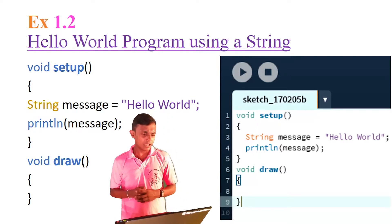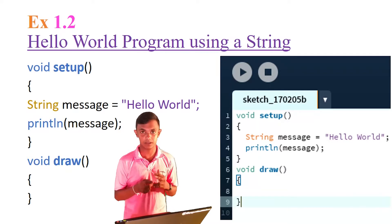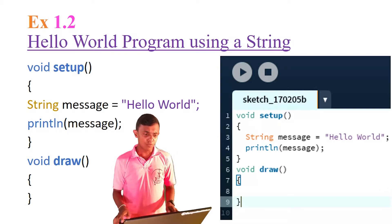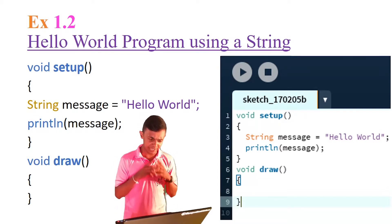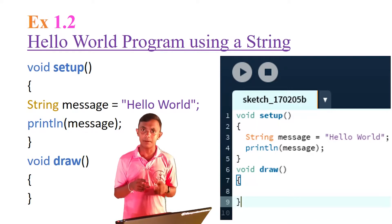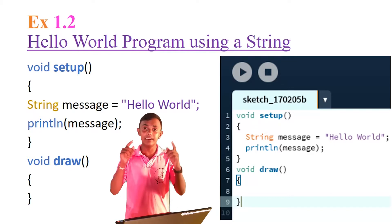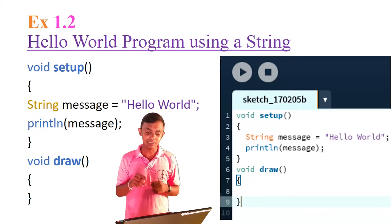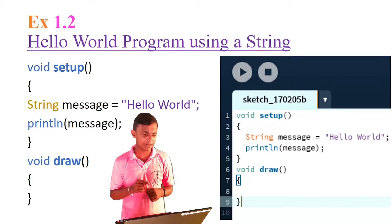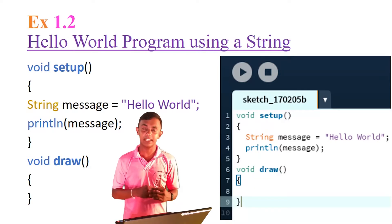This is the Hello World program using a string. We will construct the string in this video. There is a String type — String with a capital S. There is a String type variable with several fields. We will see it printed in the same column, covering all sections.